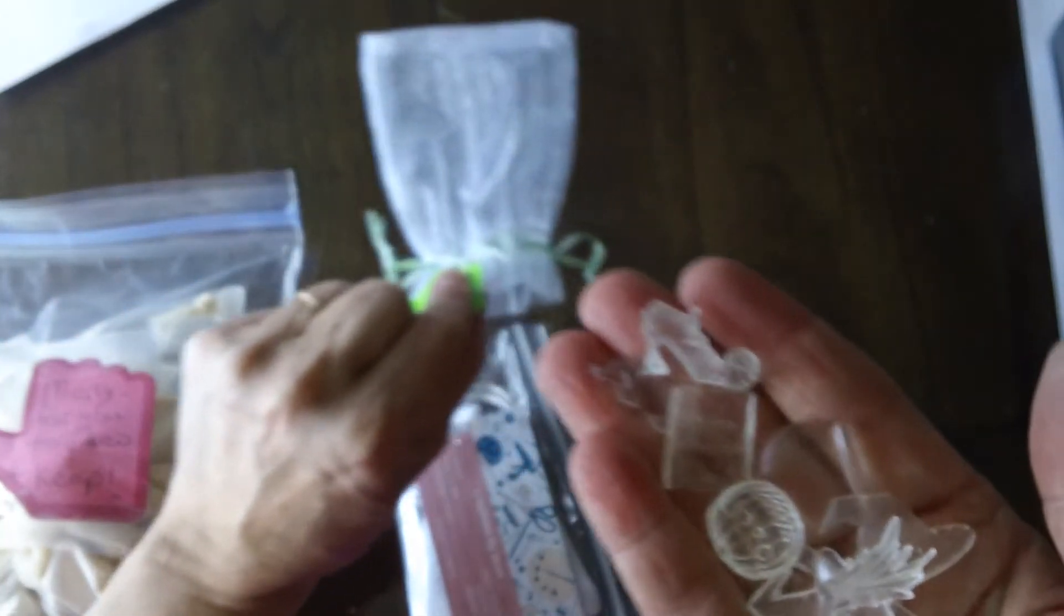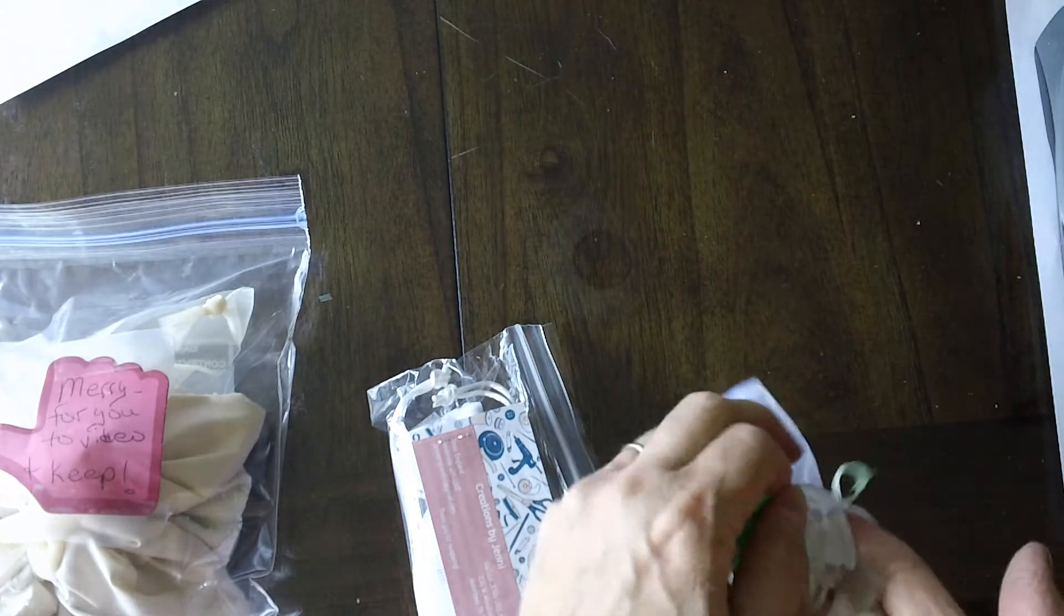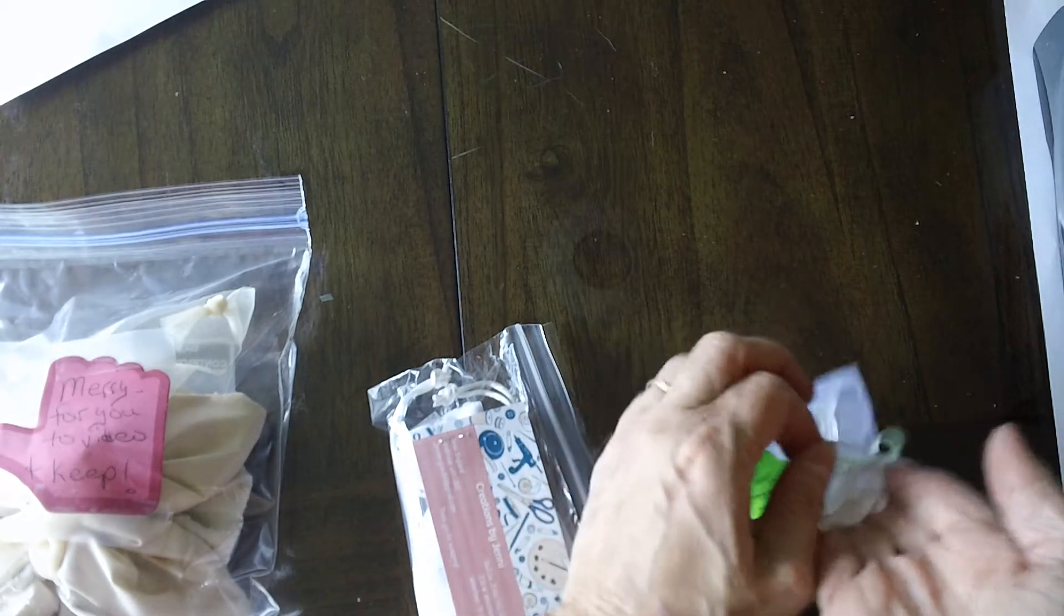So those are kind of fun little things. And here's a little frog. So those are the ones that Chris made, oh there's another witch's shoe. So those are the ones Chris made and she made me a set.